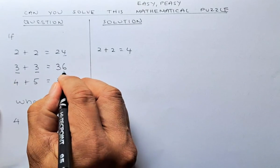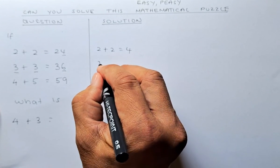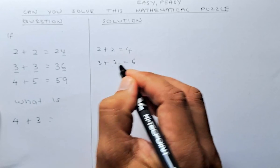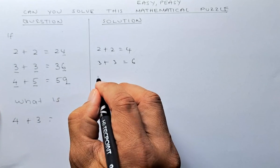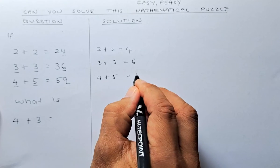3 plus 3 is equal to 6, so that will be the last digit. And 4 plus 5 is the last digit, so 4 plus 5 is 9.